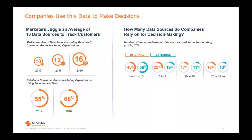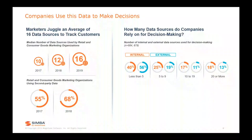What really matters is how this impacts individual businesses. Looking at how businesses make decisions: a decent chunk are using fewer than five data sources, but a pretty substantial amount are using at least five sources. For marketers, they're juggling up to 16 different data sources, including many second-party external data sources, and they need to find ways to manage all this access and rationalize it into some unified schema so they can actually take action from that data.